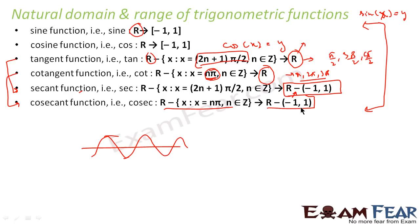And for cosec, any real number minus 1 to 1. Just to understand this memory tip, if you see, remember, sin and cos, the output is minus 1 to 1. If you say 1 by sin, that is cosec, the output will be any real number minus, minus 1 to 1. Same for sec. And for tan and cot, the output is any real number.